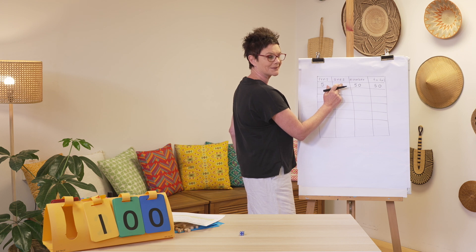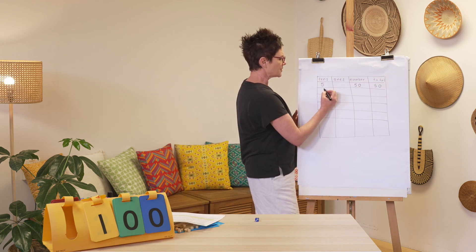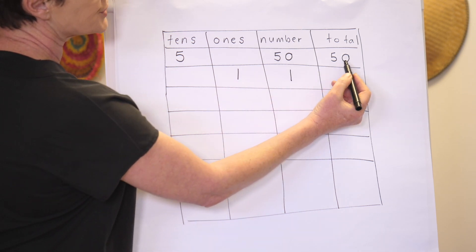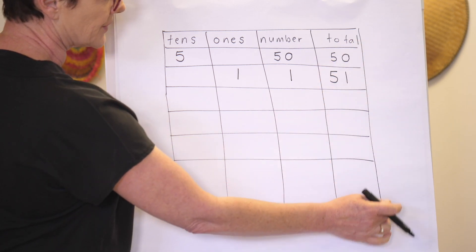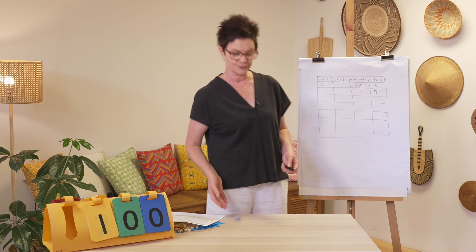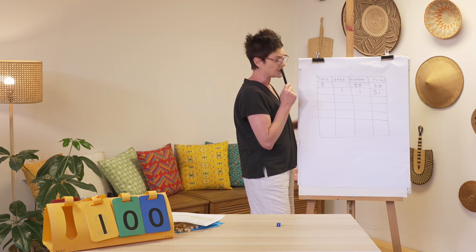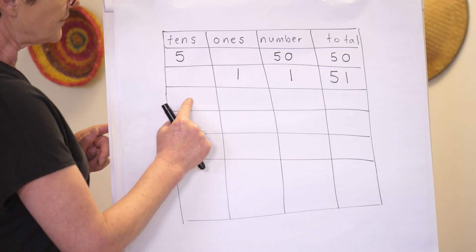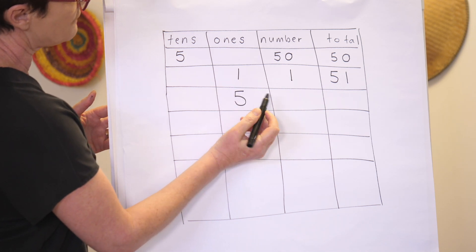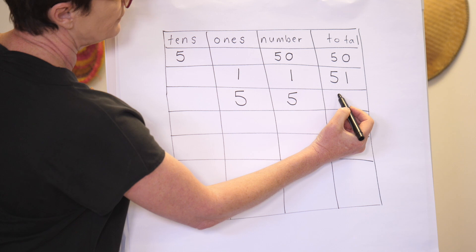Roll again — one. I'm going to use one as one ones, so my number is one and my total is 51. I'm adding on, remembering I want to get to 100 but no bigger. Next roll — five. If I put it in the tens I'll bust, so I'm going to use it as five ones. Five ones is five, and my total is now 56.